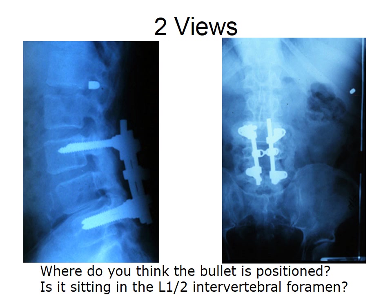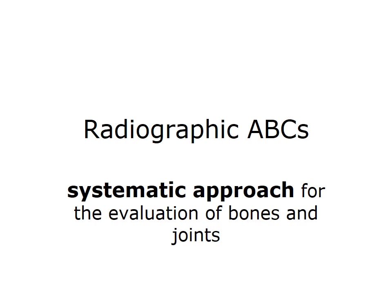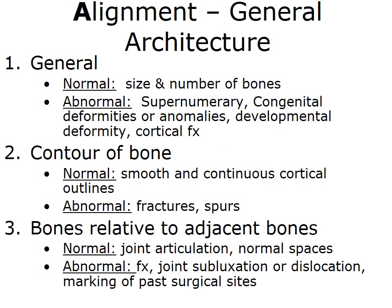Here is a systematic approach when looking at bones and joints — we'll refer to this as the ABCs. A means alignment, which is the general alignment of the architecture. You're looking first at what you see: what are the size and number of bones present? Then look at the contour of the bones — smooth, continuous lines. Then what do bones look like adjacent to other bones? Do you have normal spaces? Space shows up much darker because there's no bone there. What does alignment and spacing look like between spinal segments or within extremity joints? Does one side look like the other with a bilateral comparison?